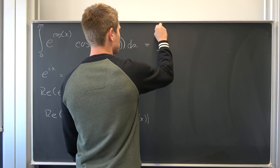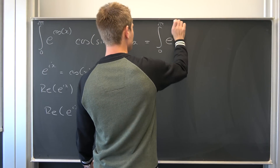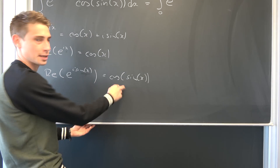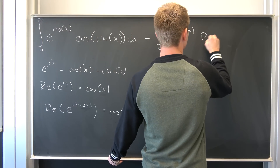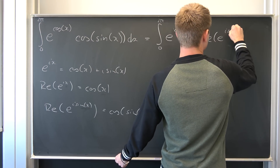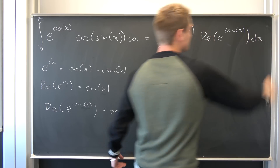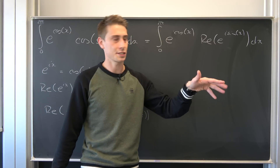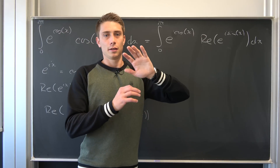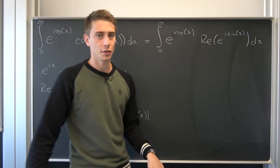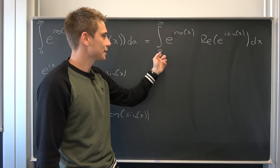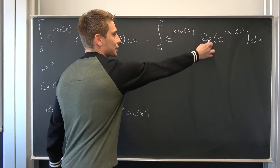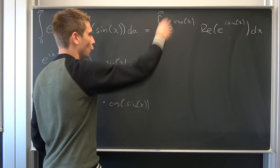So we end up with an integral from zero to two pi of e to the cosine of x, times the real part of e to the i times sine of x dx. Real numbers and complex numbers form a Banach lattice, and what this means is that since both are real operators, we can interchange them — we can bring the real part to the outside and take the real part of the whole integral.